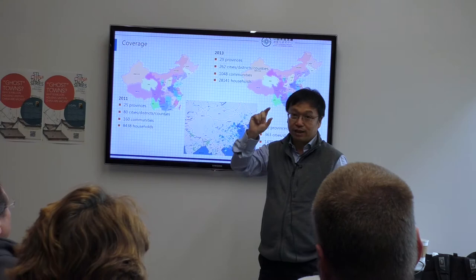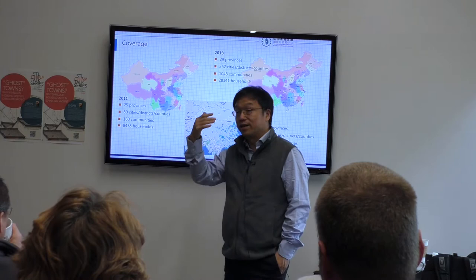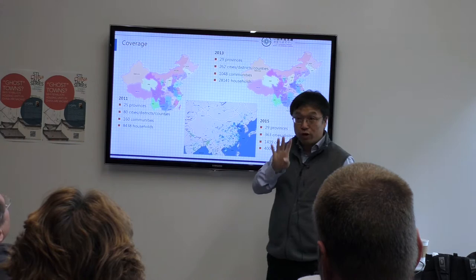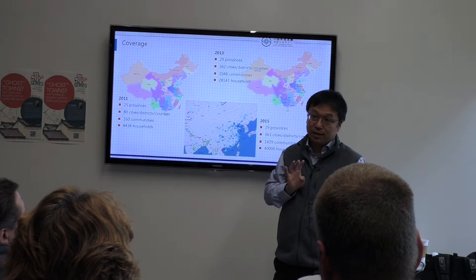After selecting the counties, you can go to the National Bureau of Statistics website and find the list of communities in China. We randomly draw about four communities from the NBS website.